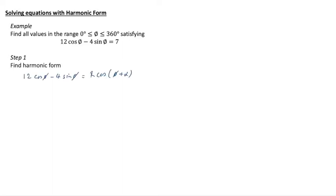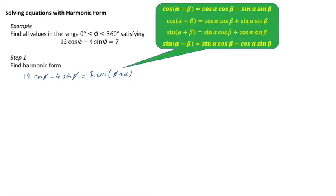Step 1, find the harmonic form. Well, 12 cos phi minus 4 sine phi equals r cos phi plus alpha. And notice we have four different forms for this, because we've got these four different formulae. And notice that two of them have a minus in the middle, and that's cos alpha plus beta or sin alpha minus beta. Two of them have a plus in the middle, cos alpha minus beta and sin alpha plus beta. And it's entirely up to you which you choose for these. But very often people choose cos alpha plus beta when there's a minus in the middle and sin alpha plus beta when there's a plus in the middle. Because that avoids having minuses in the cos alpha plus beta or sin alpha plus beta. It really doesn't matter as long as you're careful it'll all shake down right anyway.